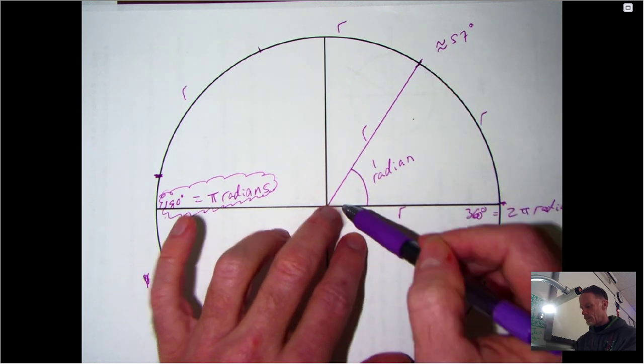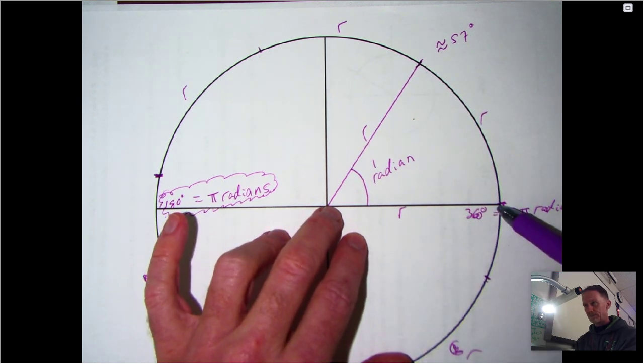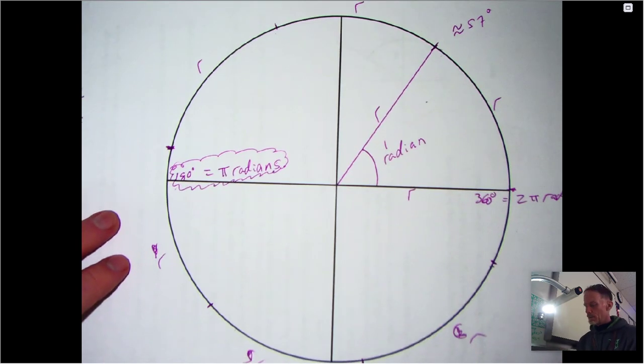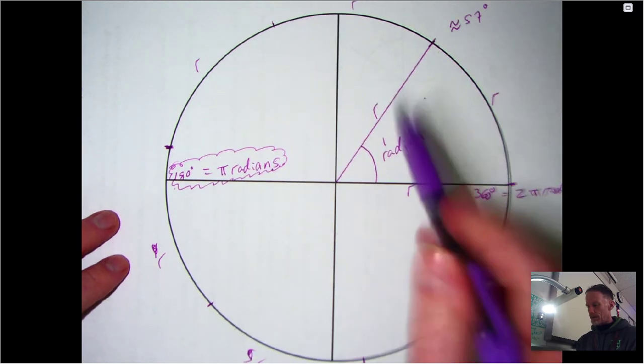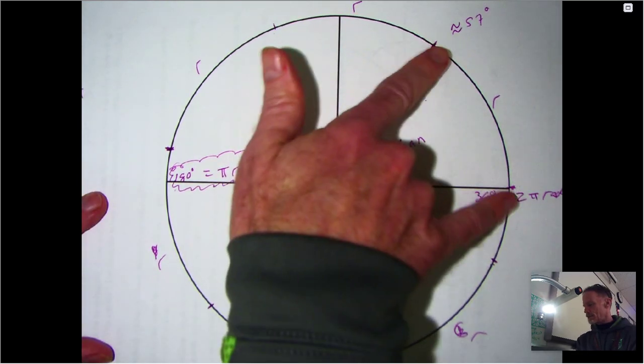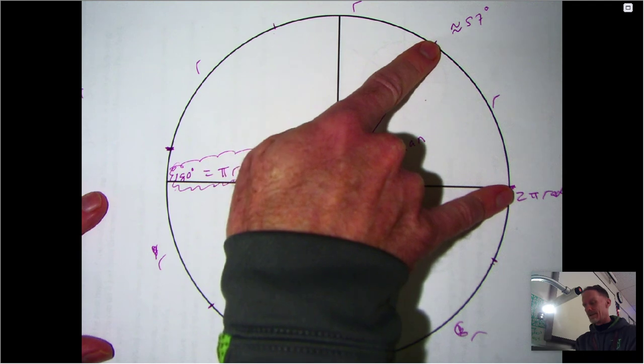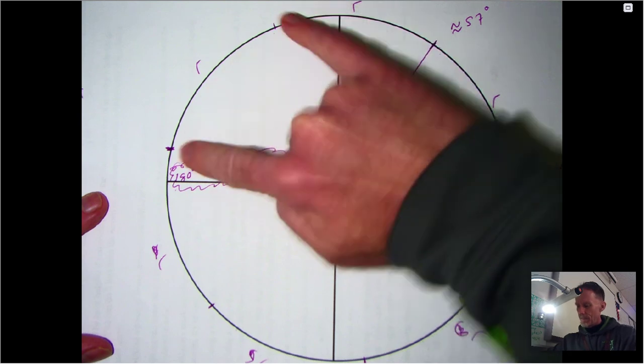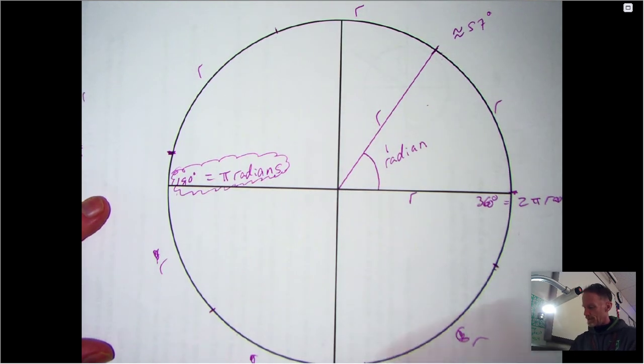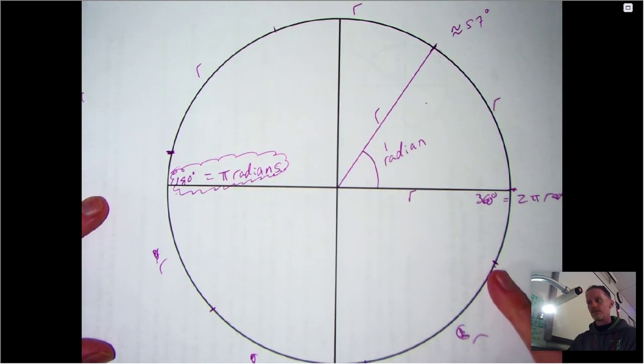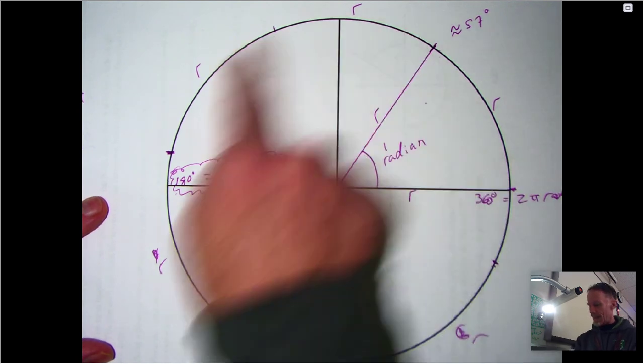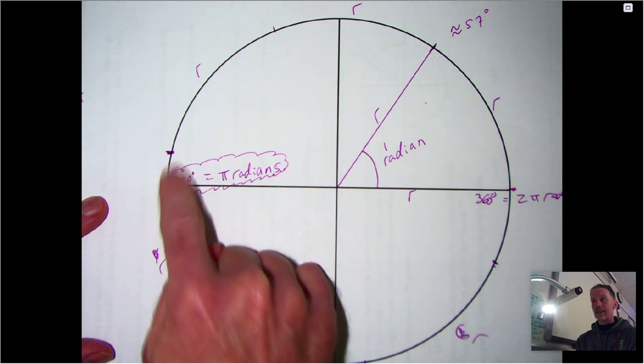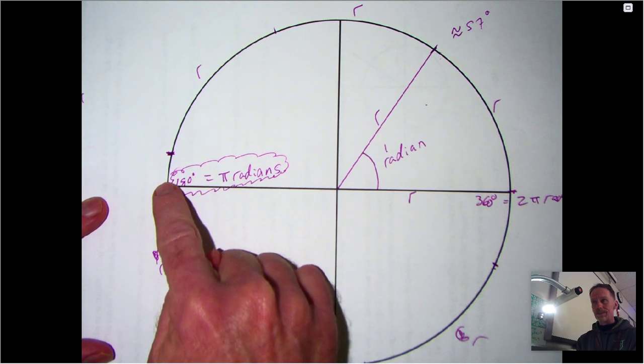But how does that help us do conversions? Well, if you see the other marks that I made on the paper here, basically what I did is I took that same distance, that same radius length, and just made some more marks. There's my second radius length, there's the third, there's the fourth, there's the fifth, there's the sixth.